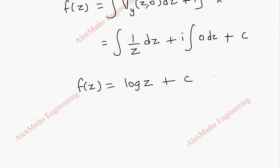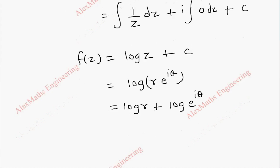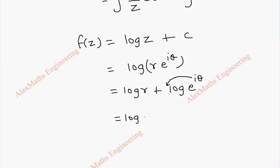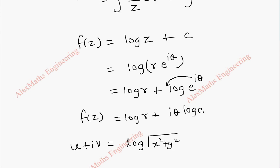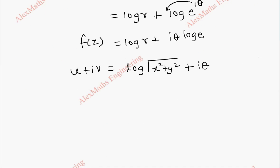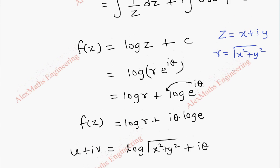We have the analytic function but need to extract u, the real part. We replace z with r·e^(iθ). Using log rules, log(r·e^(iθ)) splits into log r + log(e^(iθ)). By the power rule of logarithms, iθ comes forward giving i·θ·log e, and since log e = 1, we get log r + iθ. Here r = |z| = √(x² + y²), so log r = log√(x² + y²).